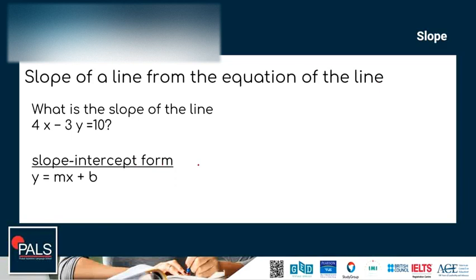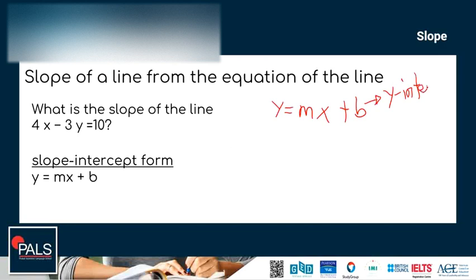Let's proceed to finding the slope of a line from the equation of the line. The question is: what is the slope of the line 4x minus 3y equals 10? Let us remember the slope-intercept form. The slope-intercept form of an equation is y equals mx plus b, where b represents the y-intercept and m represents the slope. All we need to do is rewrite the given equation in slope-intercept form to find the slope.